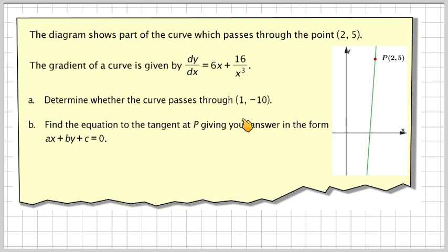Part a: Determine whether the curve passes through (1, -10). Part b: Find the equation to the tangent at P, giving your answer in the form ax + by + c = 0. So we've got to find the tangent at that point there.